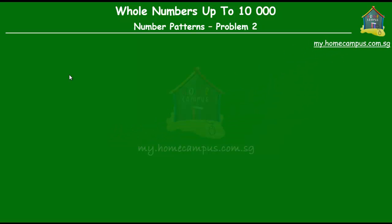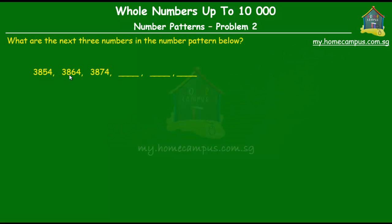Hello and welcome to my.homecampus.com.sg. Let's solve another problem on number patterns. What are the next three numbers in the number pattern below? The numbers given to us are 3854, 3864, 3874, and then three missing numbers.